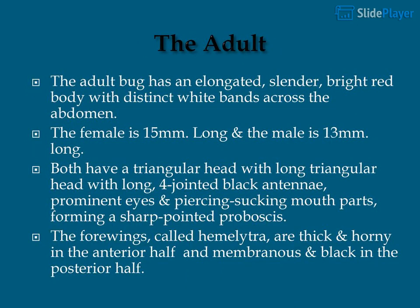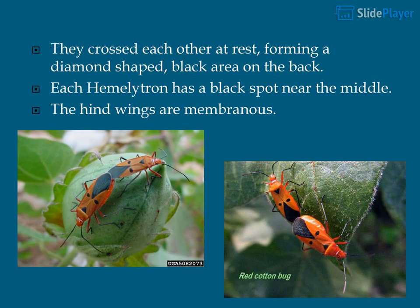The adult bug has an elongated, slender, bright red body with distinct white bands across the abdomen. The female is 15 mm long and the male is 13 mm long. Both have a triangular head with long, four-jointed black antennae, prominent eyes, and piercing-sucking mouthparts forming a sharp pointed proboscis. The four wings, called hemelytra, are thick and horny in the anterior half and membranous and black in the posterior half, crossing each other at rest to form a diamond-shaped black area on the back. Each hemelytron has a black spot near the middle, and the hind wings are membranous.